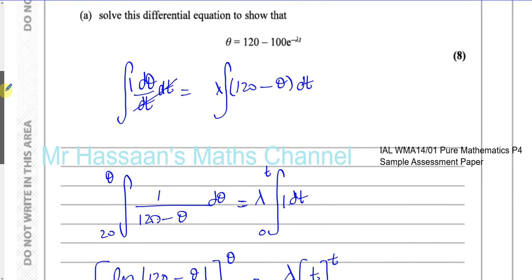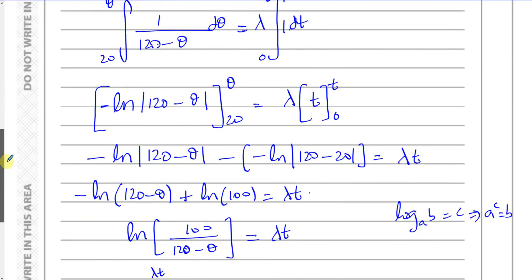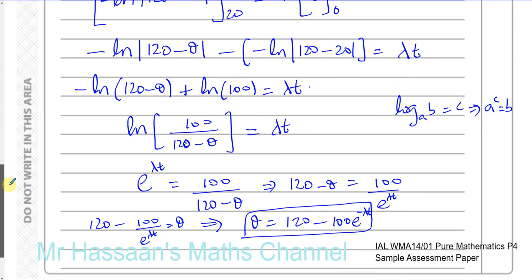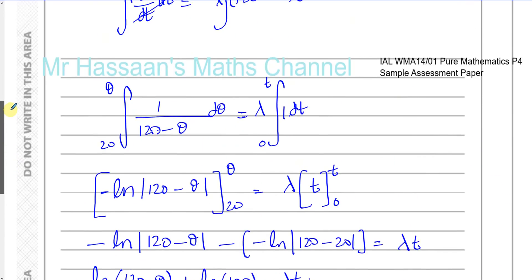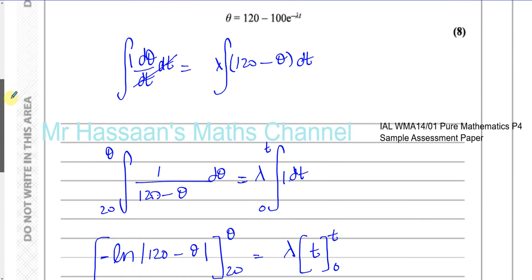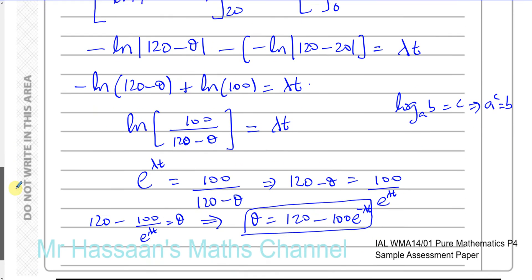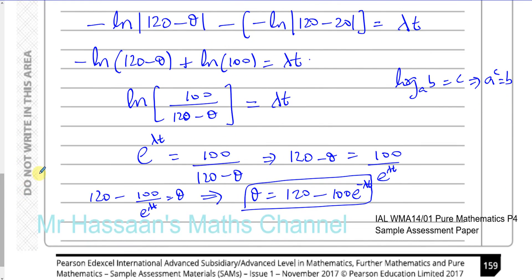And there is the answer to Part A. This is exactly what we were asked to show: 120 minus 100 e to the power of minus lambda t. That's exactly what we had to show — so there's the answer to Part A.